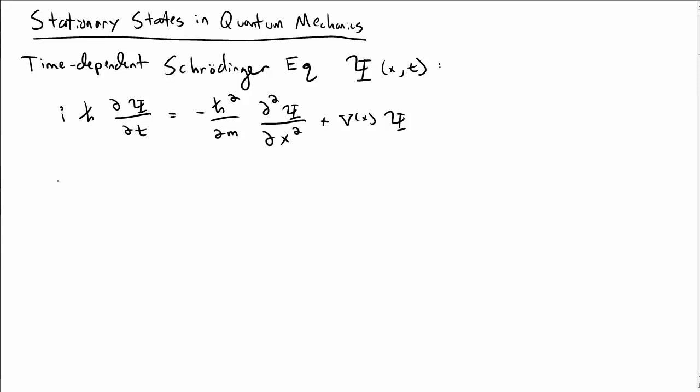Let's explore solutions to the time-dependent Schrödinger equation for ψ of x and t. This is a partial differential equation, and one of the techniques we use to solve partial differential equations is the technique of separation of variables.